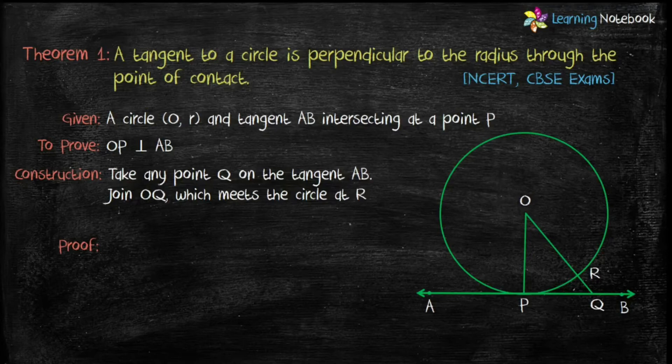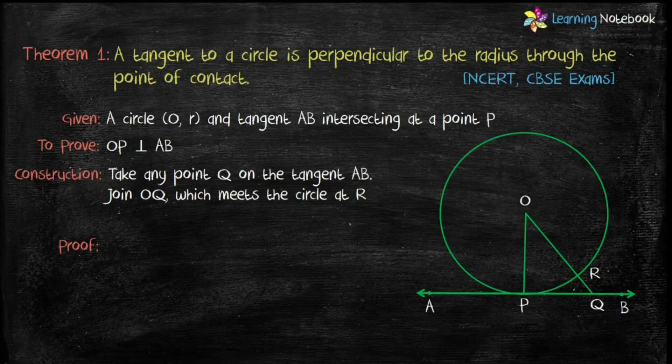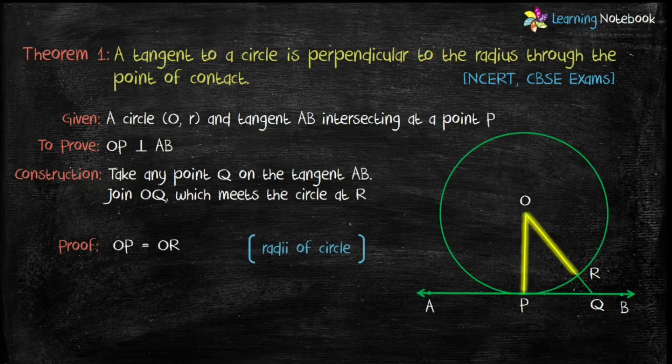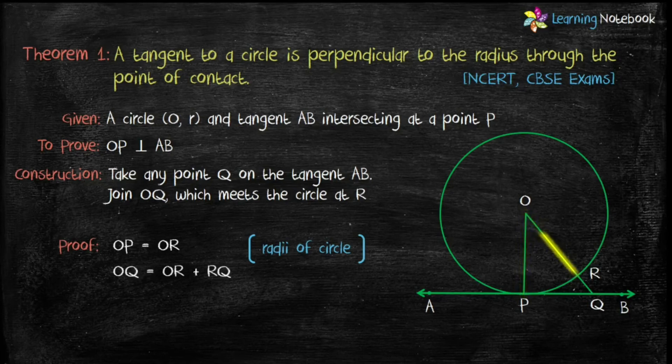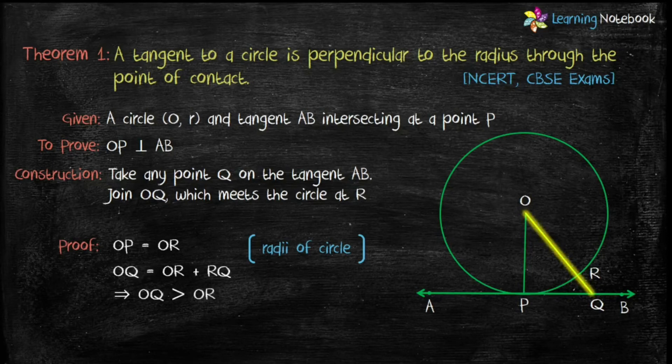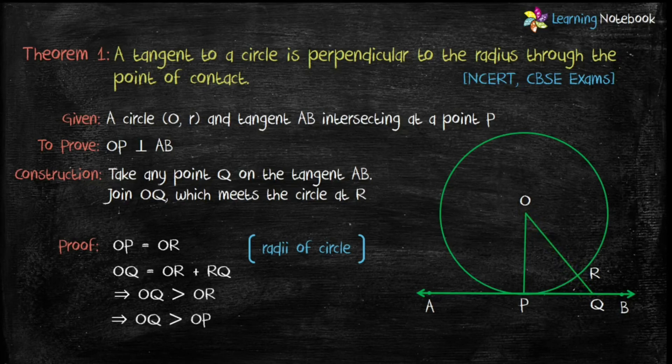To prove OP is perpendicular to AB, we have to prove OP is the shortest distance between point O and point P. We know OP equals to OR because both are radii of the same circle. Also, OQ equals to OR plus RQ. This implies OQ is greater than OR which also implies OQ is greater than OP because OP equals to OR.